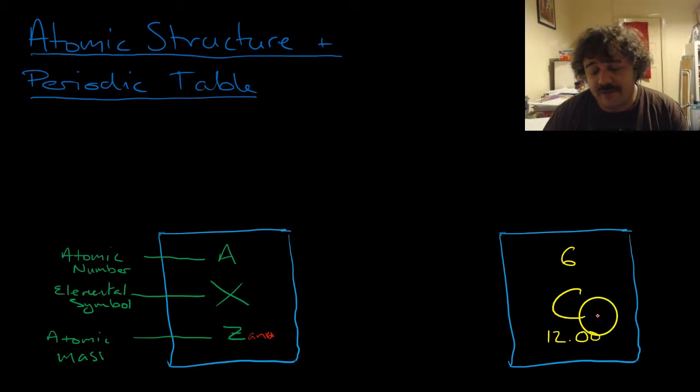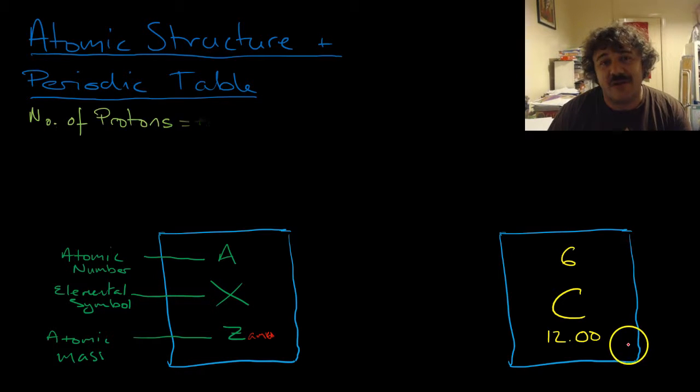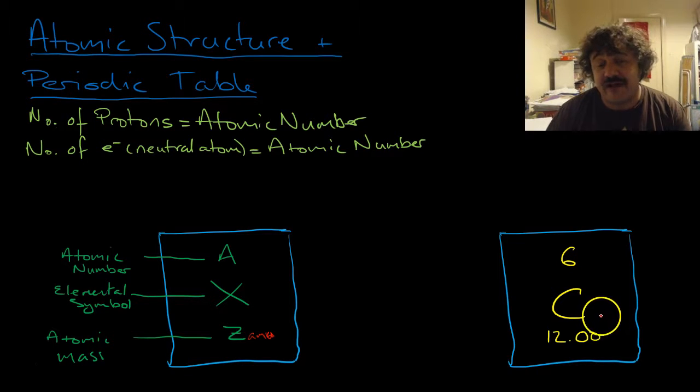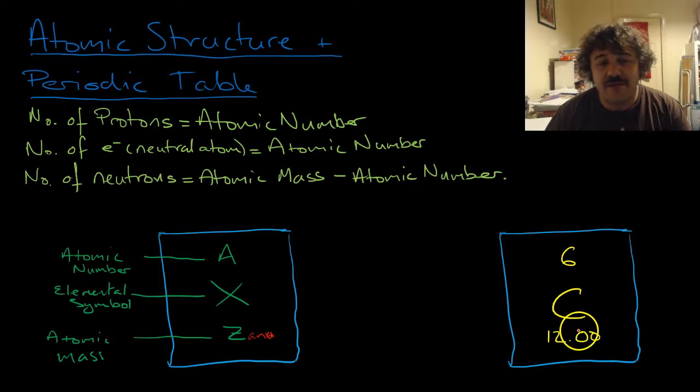Over here, we have the example of carbon. So here's the C. That's for carbon. 6 is the atomic number. And 12 is the atomic mass. Now, what information can we get from there straight away? First up, we can get the number of protons. Number of protons is equal to the atomic number. We can also get the number of electrons in a neutral atom, and it's also equal to the atomic number. But we can also get the number of neutrons. So we get the atomic mass and we take away from that the atomic number. And that's how we work it out.